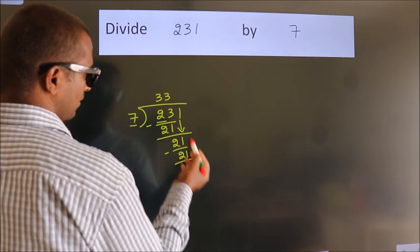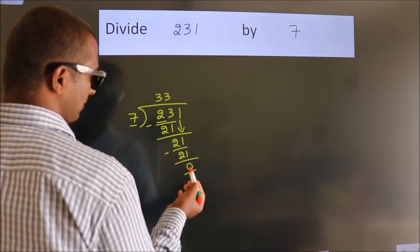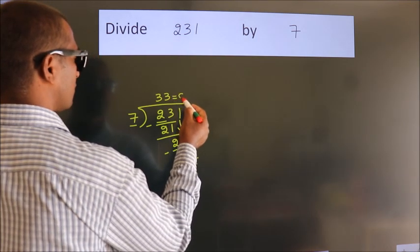After this, no more numbers to bring it down. And we got remainder 0. So this is our quotient.